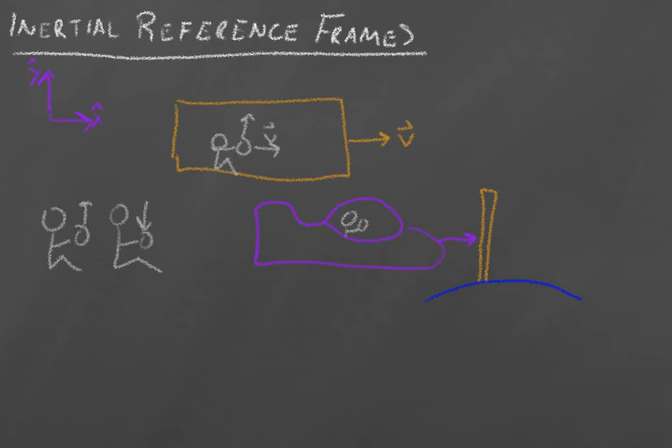So we always want to make sure whenever we're doing any kinds of calculations that we always use inertial reference frames. So your book gives two main criteria. The first is that our reference frame is not rotating.